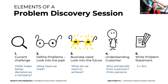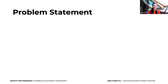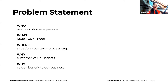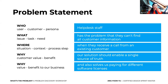A problem statement is built on the five W's. It identifies the biggest opportunity, is short and to the point, addresses actual problems — no KPIs or metrics — and looks at the root cause, not just symptoms. For example: the who is 'help desk staff,' and the what is 'the problem that they can't find all customer information.'